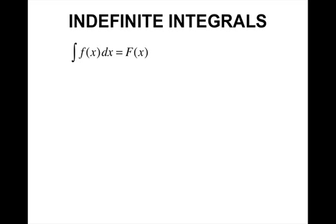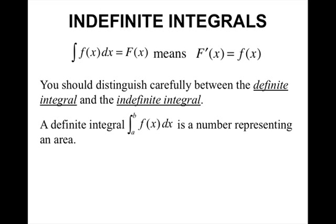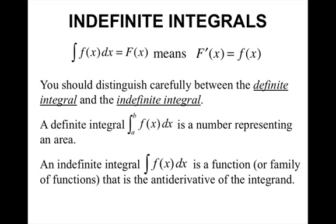Indefinite integrals: we have that the integral of little f dx equals big F. This means that the derivative of big F is equal to little f. You should distinguish carefully between the definite integral and the indefinite integral. A definite integral is the integral from a to b of f dx, which is a number representing area. An indefinite integral — the integral of f(x) dx — is a function or a family of functions that is the antiderivative of the integrand.